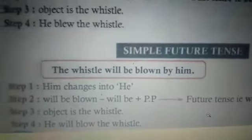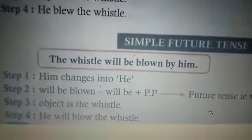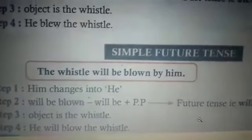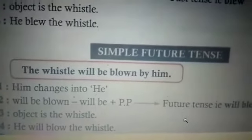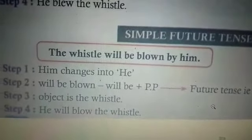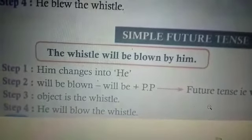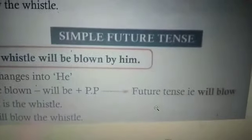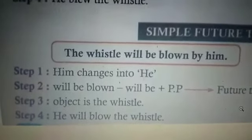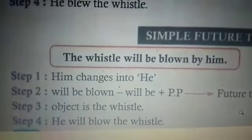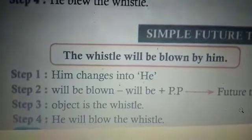Coming to simple future tense. 'The whistle will be blown by him.' Verb 1 is 'blow,' verb 2 is 'blew,' verb 3 is 'blown.' Step 1: 'him' changes to 'he.' Step 2: 'will be blown' — future passive — active is 'will blow.' Step 3: object is 'the whistle.' Step 4: 'He will blow the whistle.'